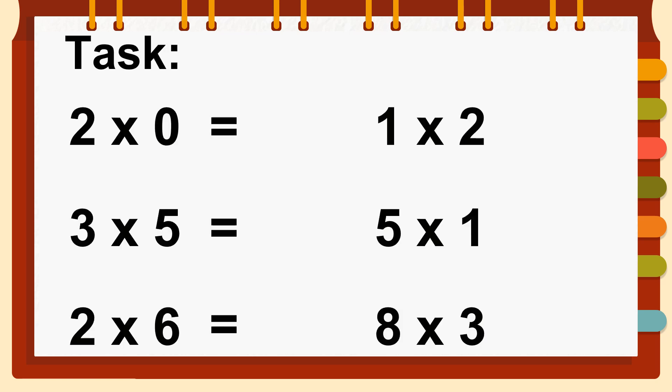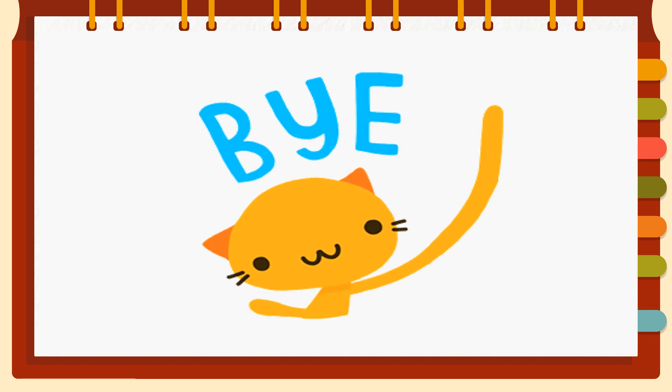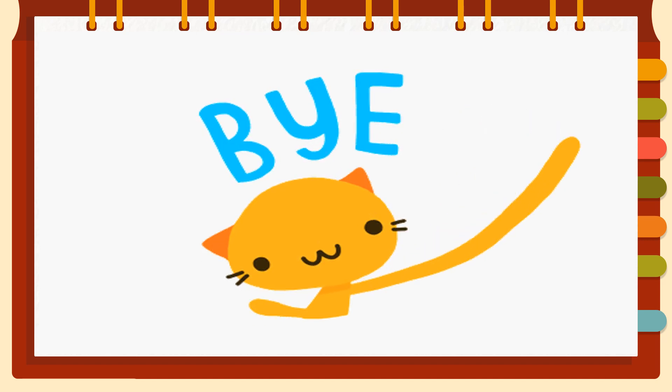And here we have our tasks for the day: two times zero, three times five, two times six, one times two, five times one, and eight times three. Do not forget the multiplication tricks we practiced — you can also use pictorials or images to represent your numbers. I believe you all get your answers correctly. We've come to the end of our lesson for today. I will see you all in the next video. Do not forget to like, share, and subscribe for more videos. Bye!